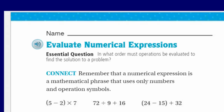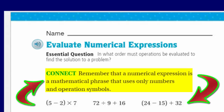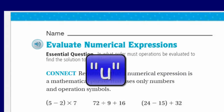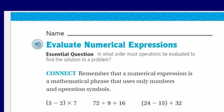But on numbers. We have a connect here. It says: remember that a numerical expression is a mathematical phrase that uses only numbers and operation symbols. We have some examples here: the difference of 5 and 2 times 7; 72 divided by 9 plus 16; and the difference of 24 and 15 plus 32.